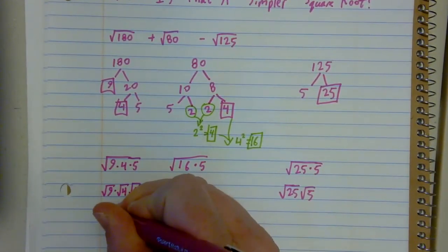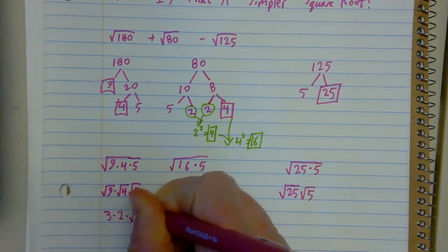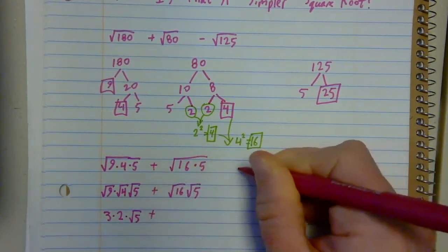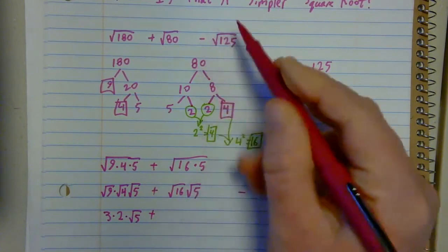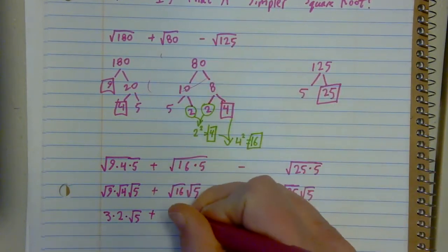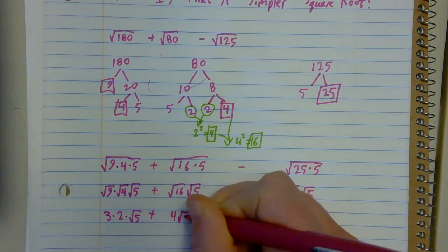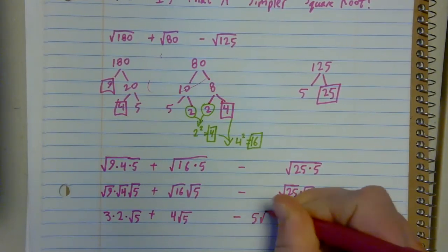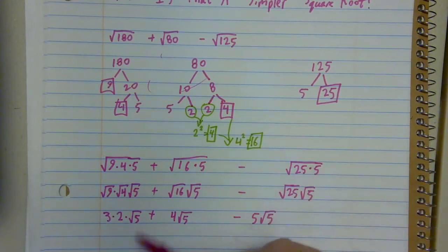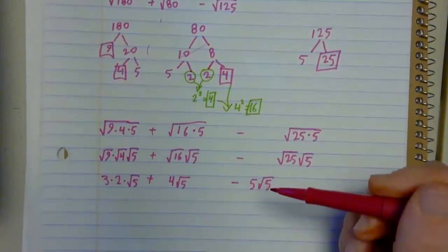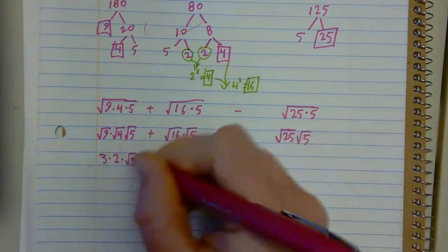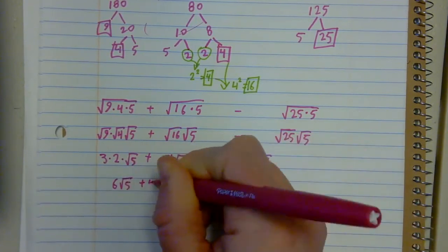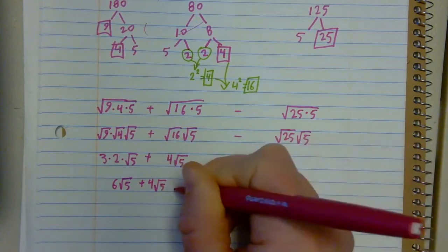I get 3 times 2 times root 5. Oh, and these were added and these were subtracted back from my problem up here. I get 4 times root 5 and 5 times root 5.